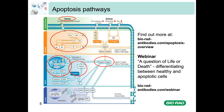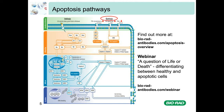Activation of the extrinsic pathway occurs through binding of specific cell surface ligands, such as FAS ligand or tumour necrosis factor alpha, to their corresponding death receptors — FAS (also called CD95) or TNF receptor 1. Once activated, death receptors oligomerise and recruit caspase 8 and adaptor proteins such as FADD to the C-terminal end of the death receptor, forming the death-inducing signalling complex (DISC). Caspase 8 is then activated in the DISC complex and subsequently activates other caspases.